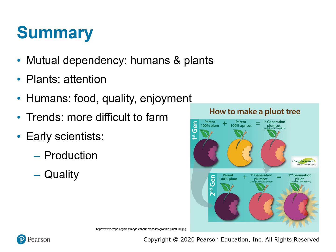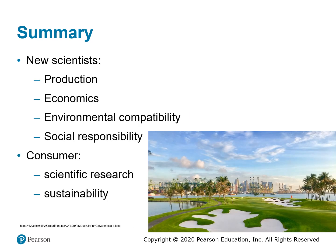In summary: humans and plants are mutually dependent on one another. Cultivated plants require attention from humans to survive, and humans need plants for basic nutritional needs as well as to add quality and enjoyment to human lives. We looked at some trends, most of which show that farming is becoming more difficult. Early scientists tended to focus more on production and quality; however, modern-day scientists need to focus not only on production and quality but also on economics, environmental compatibility, and social responsibility. Consumers too should focus on the results of scientific research, which emphasizes sustainability.